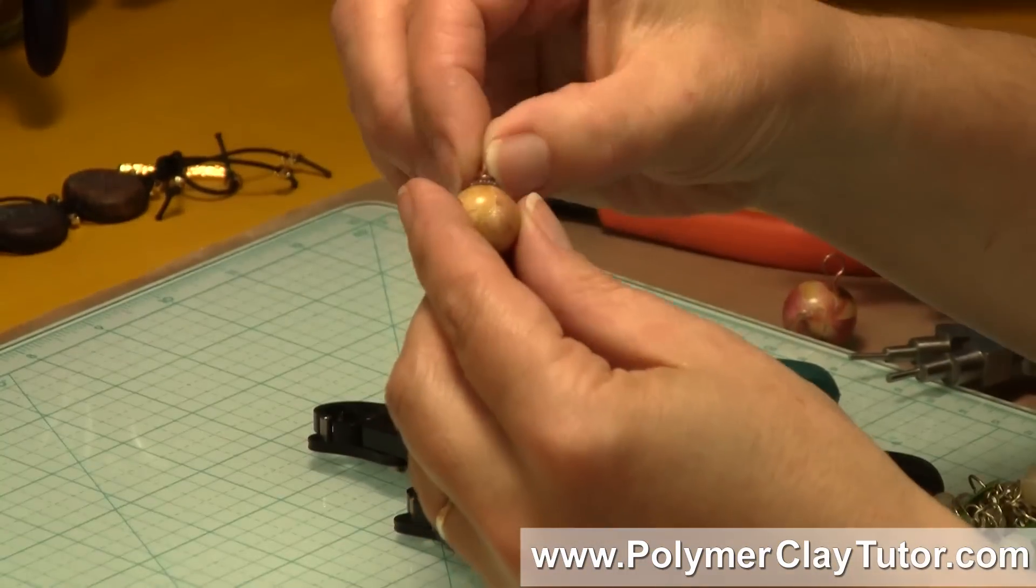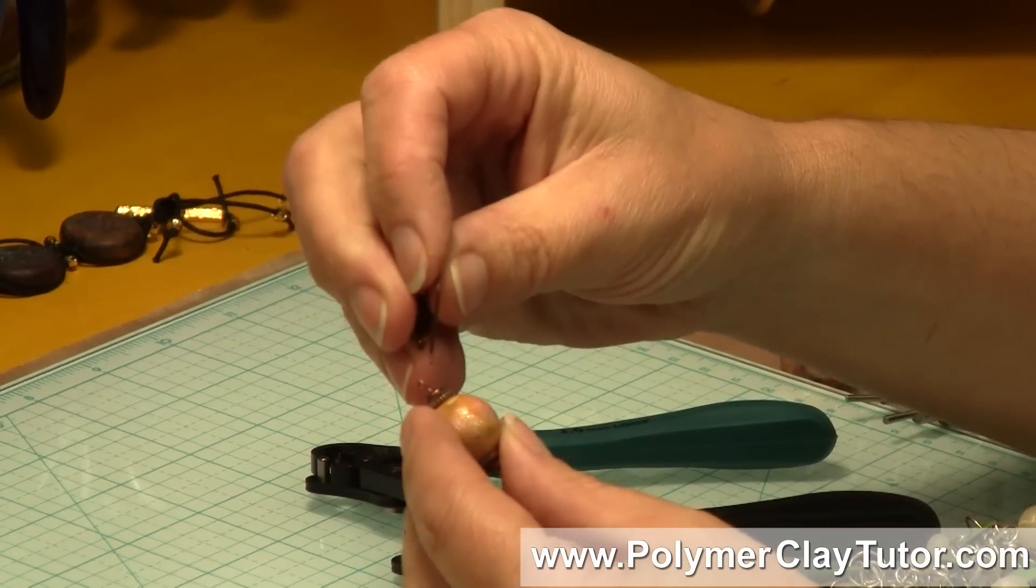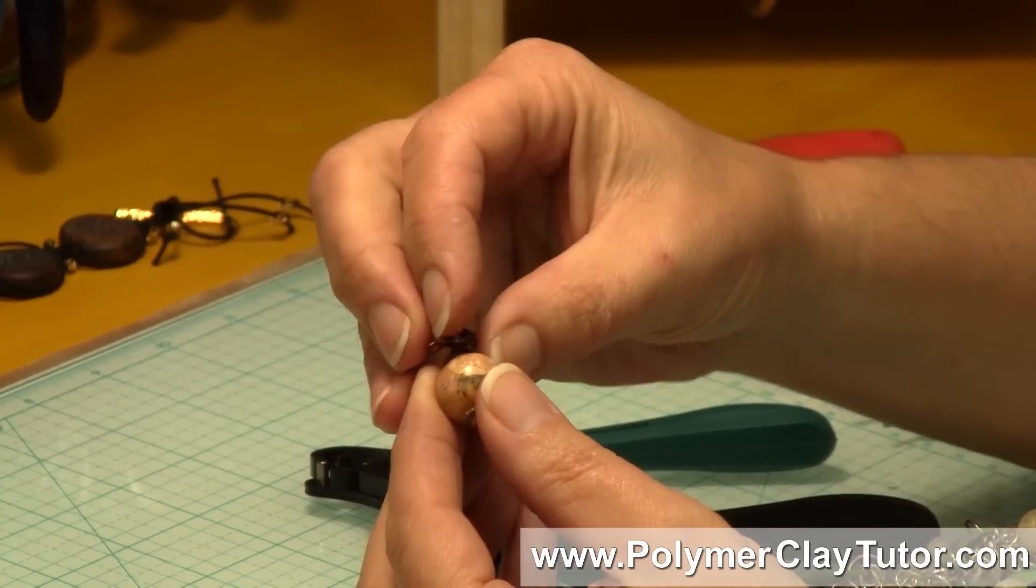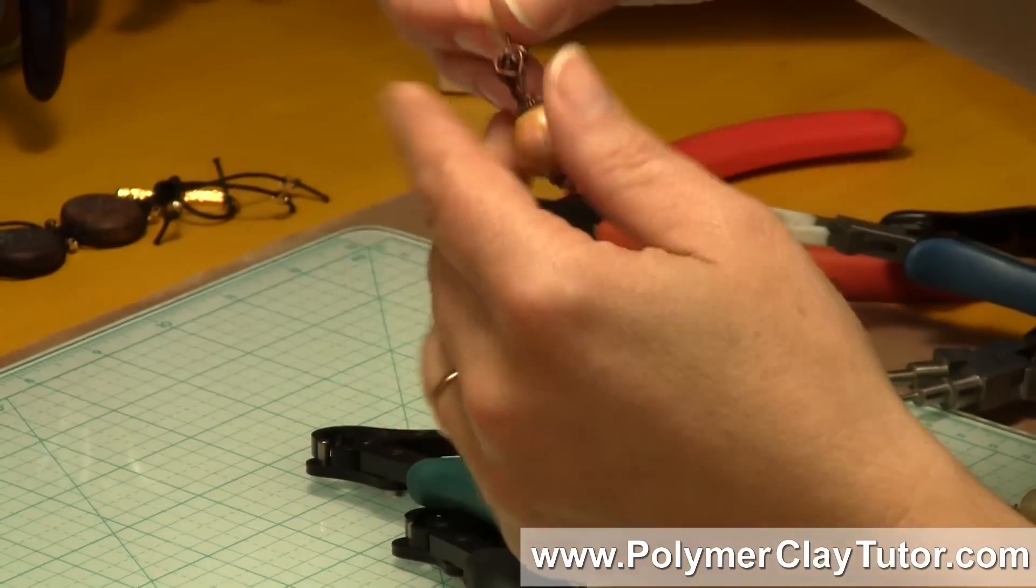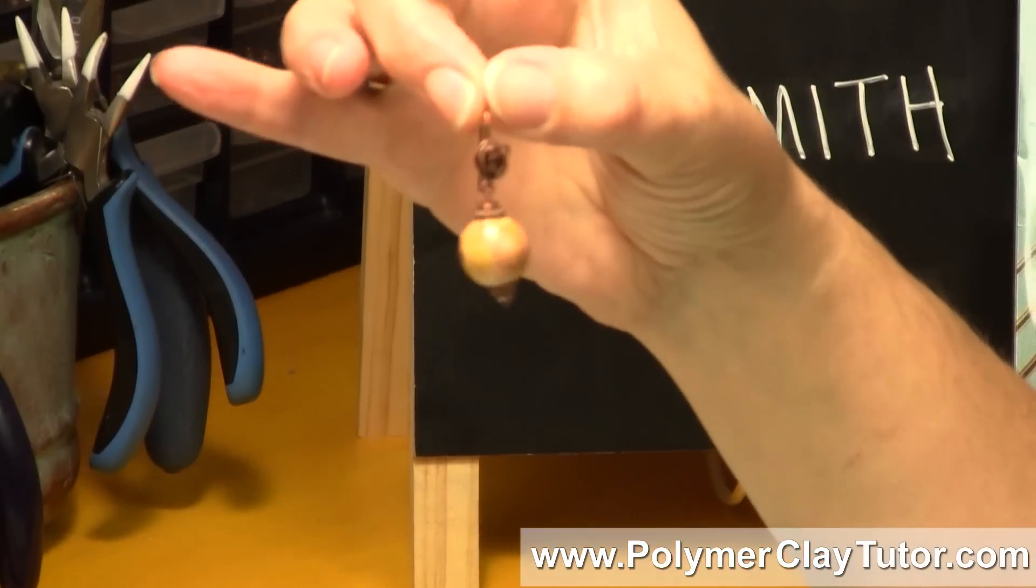but as you can see, you can get these perfect little dangles. Now I could turn that into an earring pretty much instantly by just sliding it onto an ear wire, and there you go, you can use it on bracelets and things like that, but see how fast that is